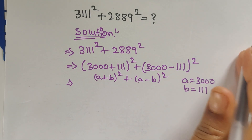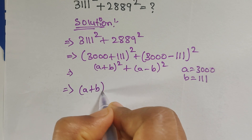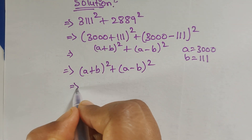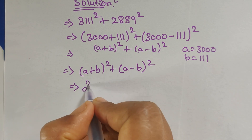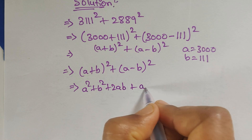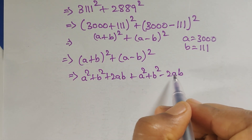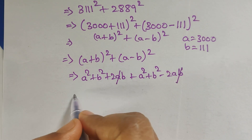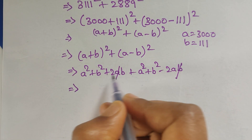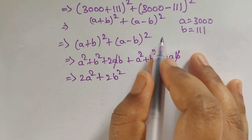Here a = 3000 and b = 111. We can write this as (a + b)² + (a - b)². Now (a + b)² = a² + b² + 2ab, and (a - b)² = a² + b² - 2ab. The +2ab and -2ab cancel out, leaving us with a² + b² + a² + b².